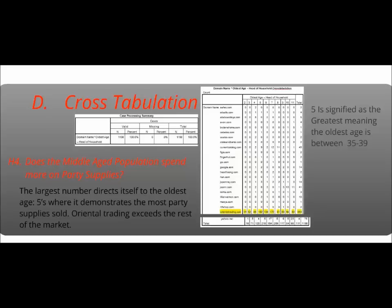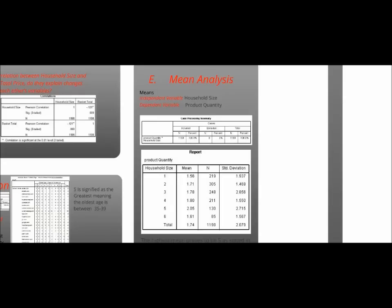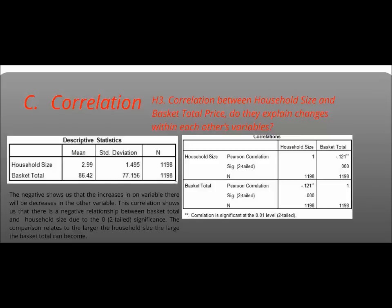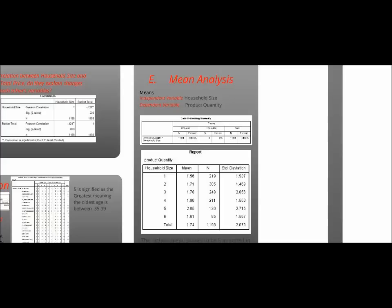For the mean analysis, the independent variable was household size and the dependent variable was product quantity. This goes over the comparison between two means and covers hypothesis three, explaining household size in relation to basket total price — or in this case, household product quantity. It showed that the fifth household size produced the most at 2.05. More than one person within the family yields a greater average number between households of size five, six, and four compared to a one-person household. The highest mean proves to be five, as stated in the cross-tabulation.